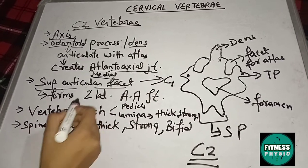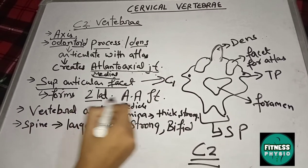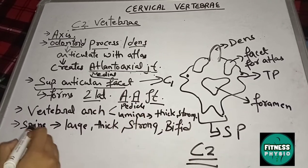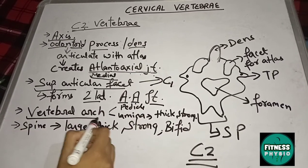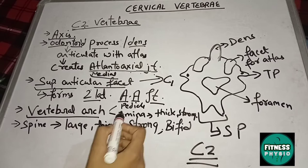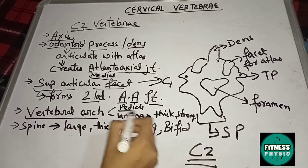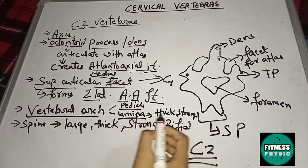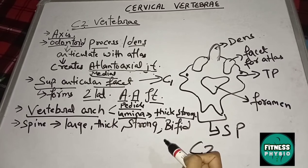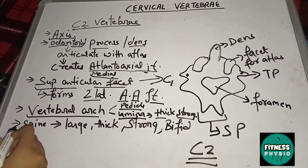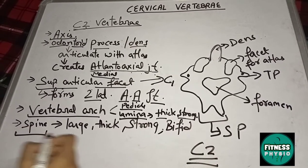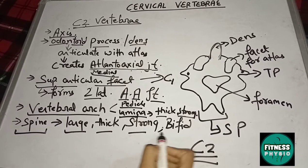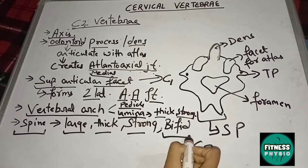C2 has a superior articular facet which articulates with the inferior articular facet of C1 (atlas), forming two lateral atlanto-axial joints. It has a vertebral arch consisting of a pedicle and a lamina, where the lamina is thicker and stronger. It also has a spinous process that is large, thick, strong, and bifid.